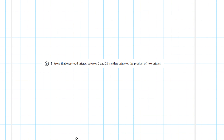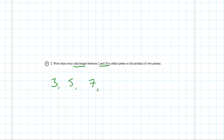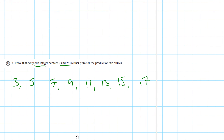Prove that every odd integer between 2 and 26 is either prime or the product of 2 primes. The first thing is we list every odd integer between 2 and 26: 3, 5, 7, 9, 11, 13, 15, 17, 19, 21, 23, and 25.